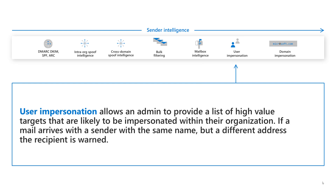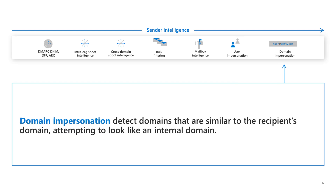User impersonation allows an admin to provide a list of high-value targets that are likely to be impersonated within the organization. If a mail arrives with a sender with the same name but a different address, the recipient is warned. Domain impersonation detects domains that are similar to the recipient's domain, attempting to look like an internal domain.